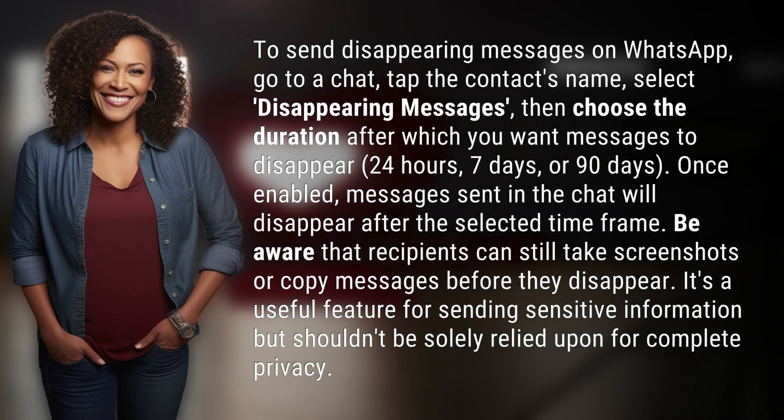To send disappearing messages on WhatsApp, go to a chat, tap the contact's name, select disappearing messages, then choose the duration after which you want messages to disappear: 24 hours, 7 days, or 90 days.